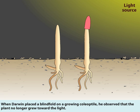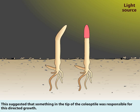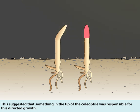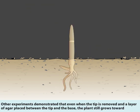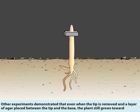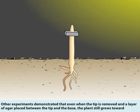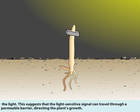When Darwin placed a blindfold on a growing coleoptile, he observed that the plant no longer grew toward the light. This suggested that something in the tip of the coleoptile was responsible for this directed growth. Other experiments demonstrated that even when the tip is removed and a layer of agar placed between the tip and the base, the plant still grows toward the light, suggesting that the light-sensitive signal can travel through a permeable barrier, directing the plant's growth.